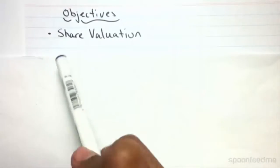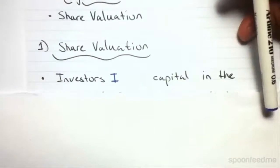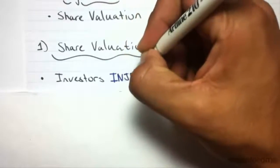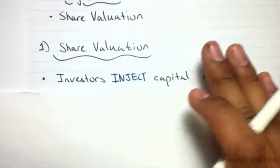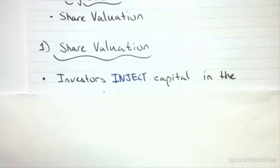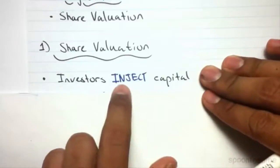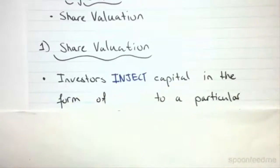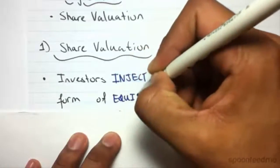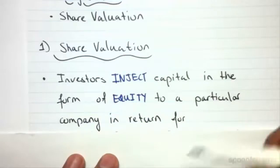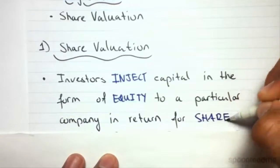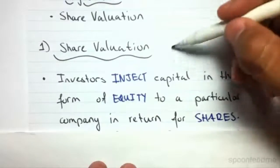Welcome everyone to this video on business finance. The objective covered today is a single one: share valuation. With share valuation, we have investors, and what they do is inject capital. All companies require money, and investors are people who can supply that money — they inject capital in the form of equity to a particular company in return for shares.